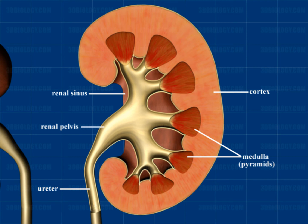The outer renal cortex is the outer portion of the kidney between the medulla and the renal capsule. The inner medulla is the innermost part of the kidney, divided into renal pyramids. The renal pyramids are cone-shaped structures with a striped appearance due to being made up of the nephrons and loops of Henle.